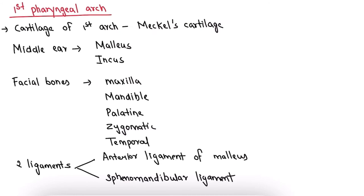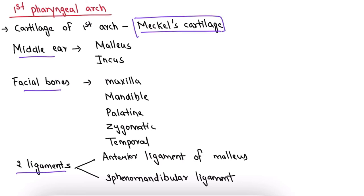How to memorize the structures derived from various pharyngeal arches: the cartilage of the first arch is called Meckel's cartilage. We can remember first pharyngeal arch derivatives by three things: middle ear, facial bones, and two ligaments. In the middle ear, malleus and incus are derived from the first pharyngeal arch, while stapes is derived from the second pharyngeal arch.